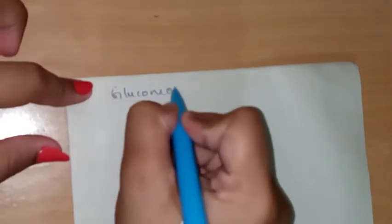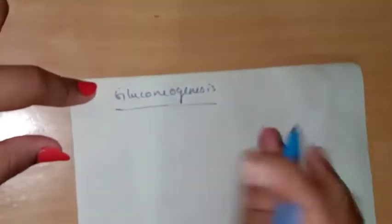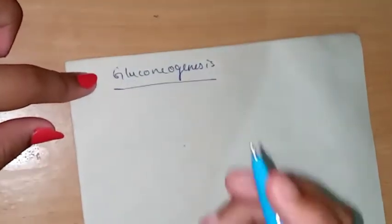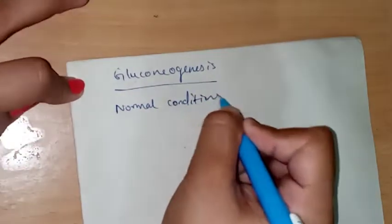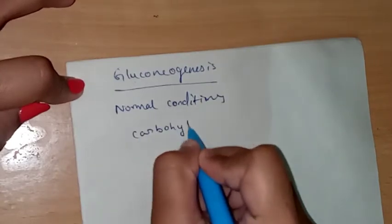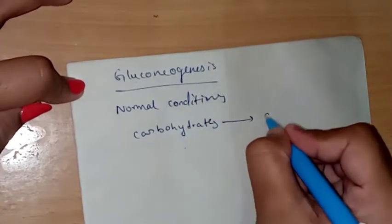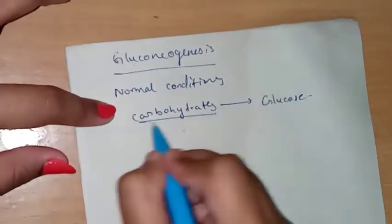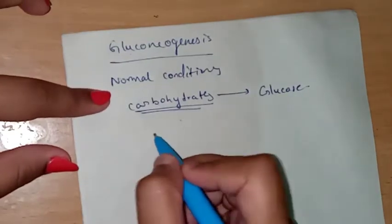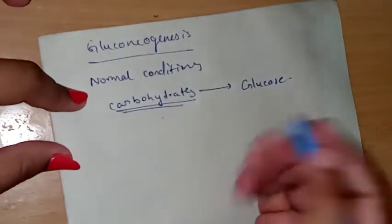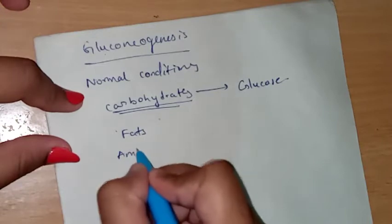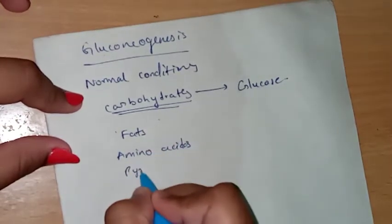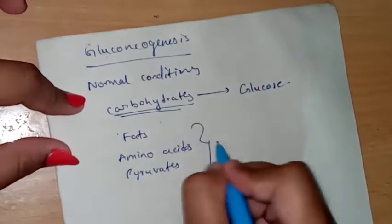Today we are going to learn about gluconeogenesis. Under normal conditions, carbohydrates are converted to glucose. But when there is a depletion of these carbohydrates, glucose is formed from non-carbohydrate sources like fats, amino acids, and pyruvates — these are converted to glucose in the absence of carbohydrates.